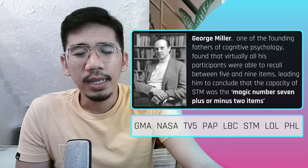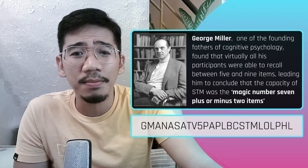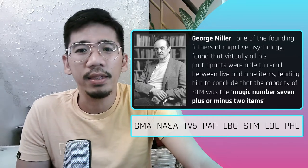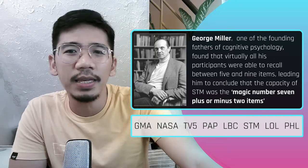The improvement is because we chunked the items into meaningful groups. Looking at the same letters and number combinations — GMA, NASA, TV5, PAP, LBC, STM, LOL, and PHL — we see familiar acronyms. Therefore, your short-term memory's capacity can be counted in the number of chunks rather than the number of individual items.